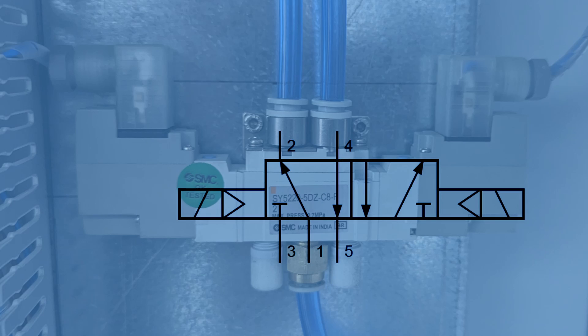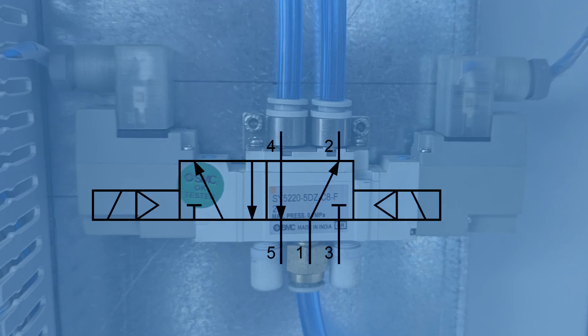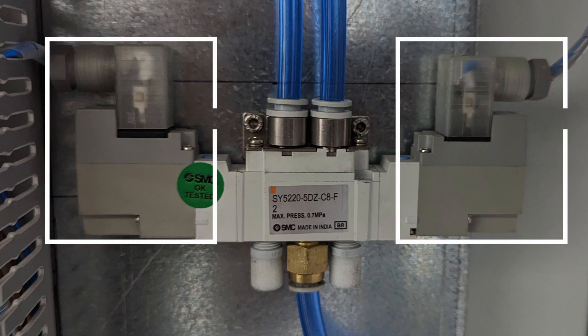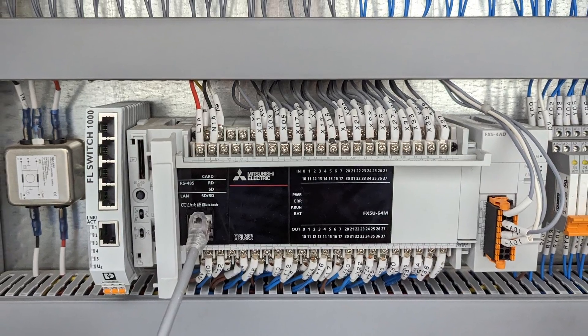But how do you switch between positions? Pneumatic valves come in a variety of actuation methods. They can be electrically solenoid-operated, which we can control using a PLC. They can be manually operated to reduce machine cost. They also come in air-operated and many more variants. Solenoid valves can be AC or DC operated.